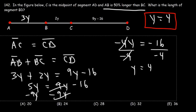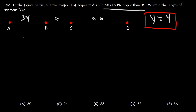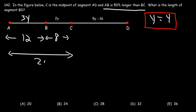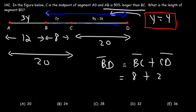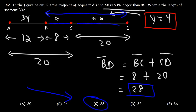Now we can calculate each segment's length. AB = 3y = 3 × 4 = 12. BC = 2y = 2 × 4 = 8. Since AC = 5y = 20, and C is the midpoint, CD must also equal 20. Segment BD is the sum of BC and CD: 8 plus 20 equals 28. Answer choice C is correct — BD has a length of 28.